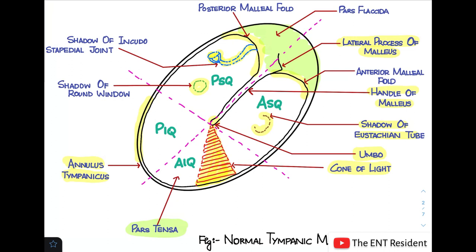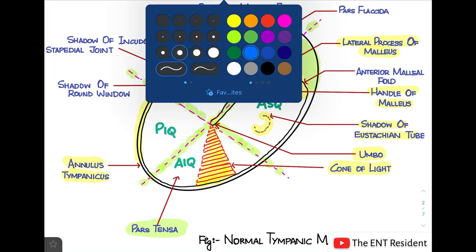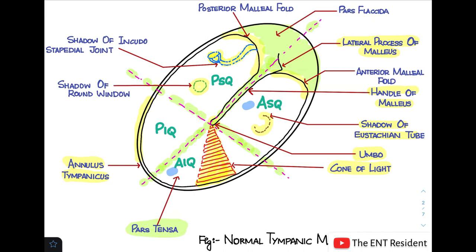How do you divide the tympanic membrane into different quadrants? You draw two dotted lines. The first dotted line goes along the long axis of the handle of the malleus. The second line goes 90 degrees to this first line at the level of the umbo. This ends up dividing the tympanic membrane into four quadrants: anterior superior — where we find the shadow of the eustachian tube — anterior inferior — where we find the cone of light — posterior inferior, and posterior superior, which is the most important quadrant where you find the shadow of the round window and the incudostapedial joint.